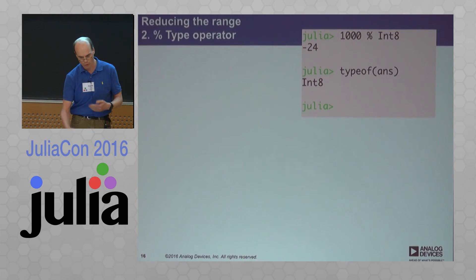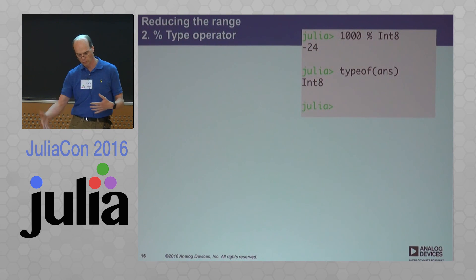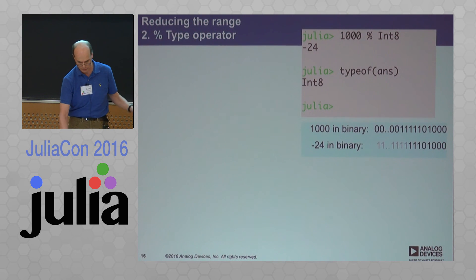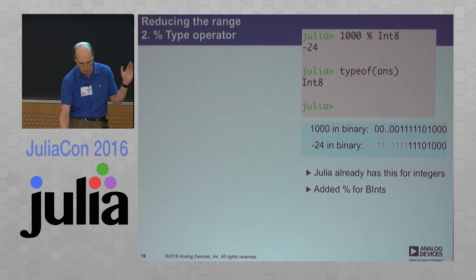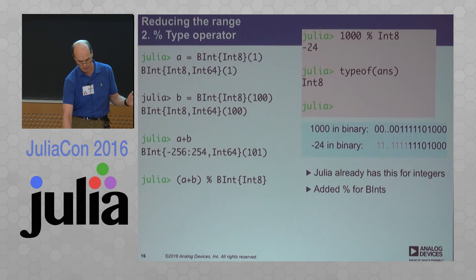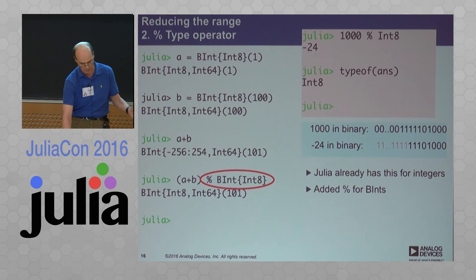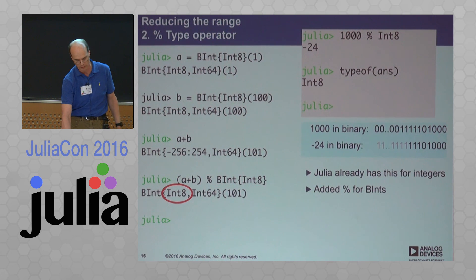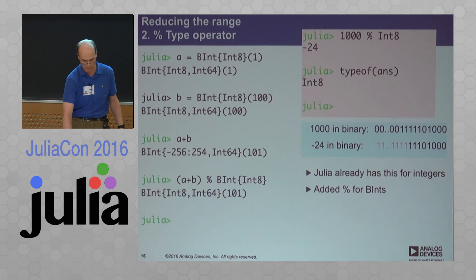You can use a modulo operator. Julia already has the concept of using a modulo type to make a reduction — you're throwing away the MSBs, that's a modulo operation. I've done the same thing in my library, and we end up with, as expected, the type we requested: an 8-bit type from a 9-bit type.